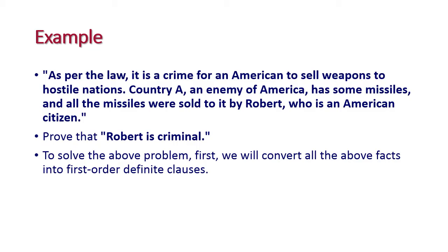Now let us see one example. The given statements are: as per the law, it is a crime for an American to sell weapons to a hostile nation. A country A, an enemy of America, has some missiles, and all missiles were sold to it by Robert, who is an American citizen. From these statements, we need to prove that Robert is a criminal.